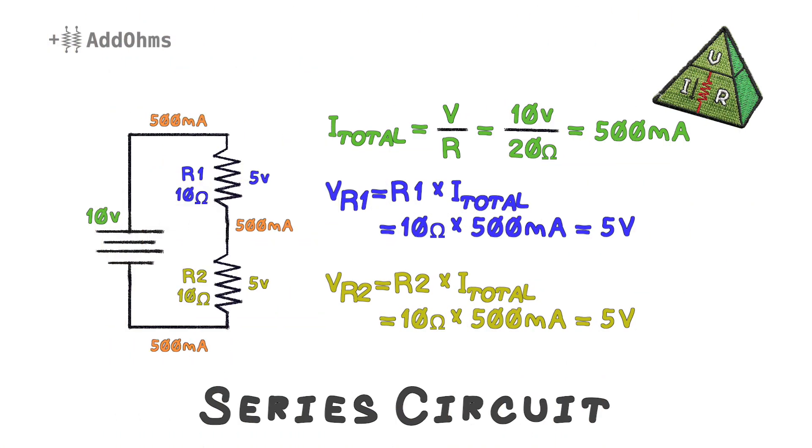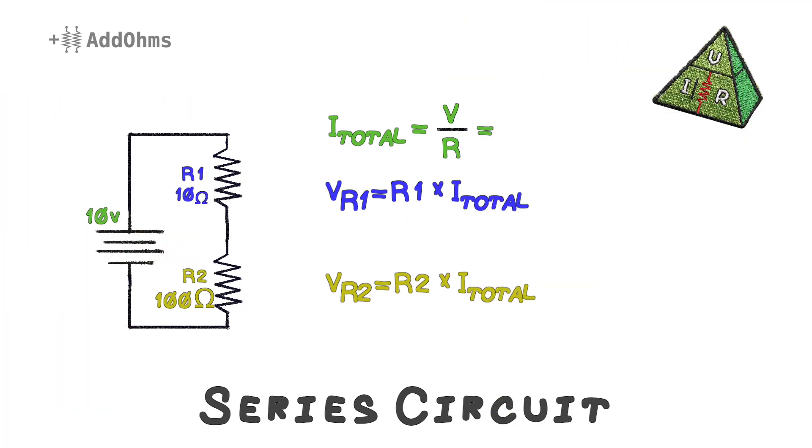Okay, new scenario. What if we change the value of R2 to something else, like, say, 100 ohms? Since we are changing one element of our circuit, we have to start all over. Let's start with the total circuit current, which is now 10 volts divided by R1 plus R2, which is now 110 ohms. This gives us a current of about 91 milliamps.